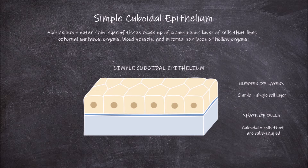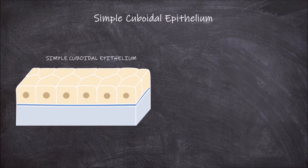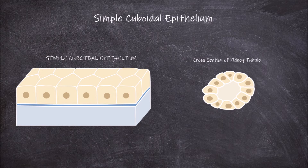Simple cuboidal epithelium is made up of a single layer of cells that are cube shaped. The single layer sits on the basement membrane. This type of epithelium is found on the surfaces of various structures within the human body. One example is the kidney tubules. As seen here, the epithelium lining the kidney tubules is made up of a single layer of cuboidal cells.